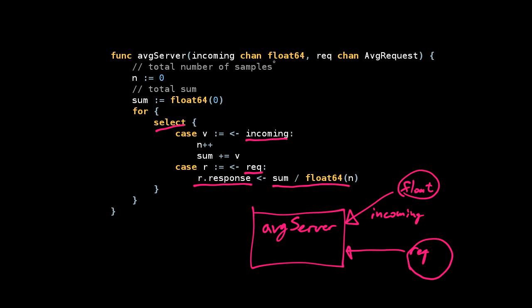This is kind of interesting. The incoming channel is just floats flowing into this average server, just going one way, coming in. On this request line, there are requests coming in, and those requests, which we're calling r down here, we use that r and open up the request to get the response, and that's actually a channel. So we're sending the average that we've seen so far onto that channel that we got in the request. There's actually a response that's included in the request, and we're going back out through that response to whoever requested it.